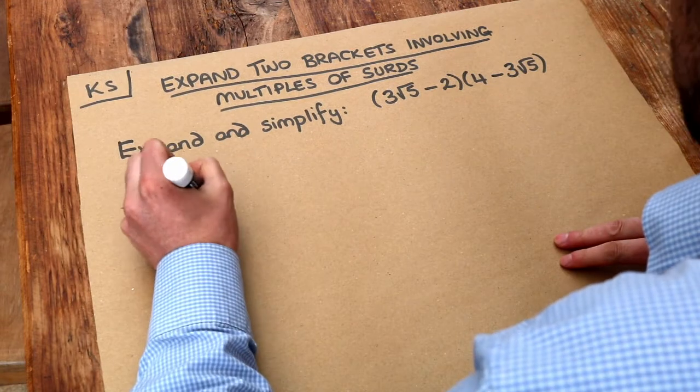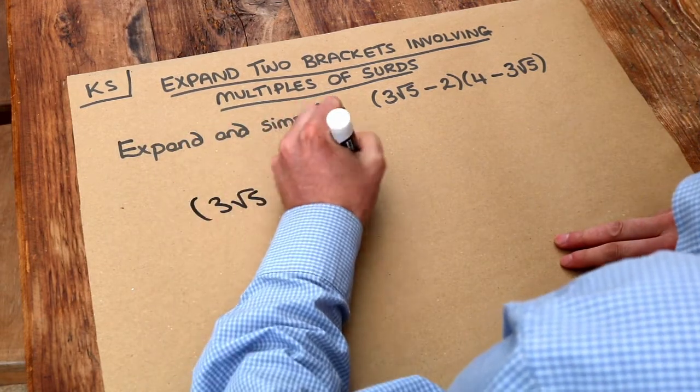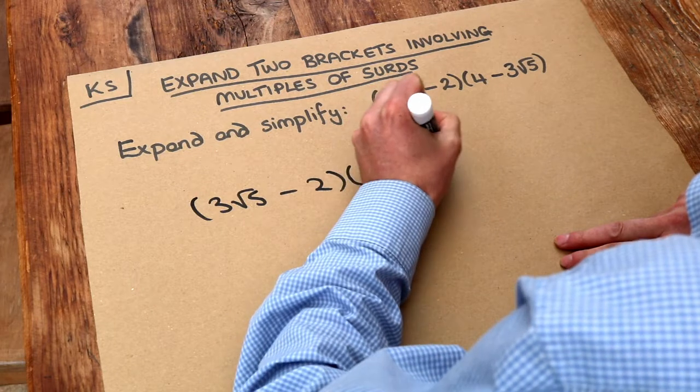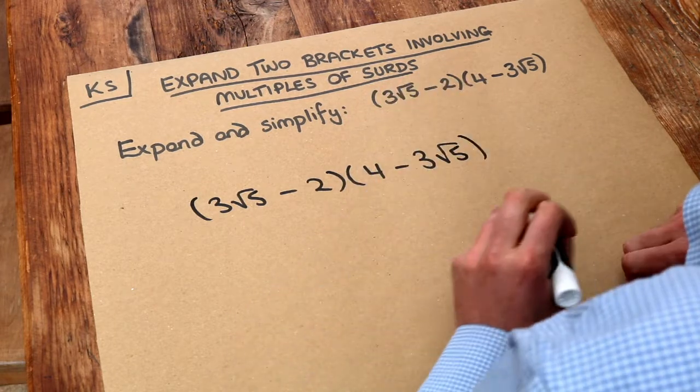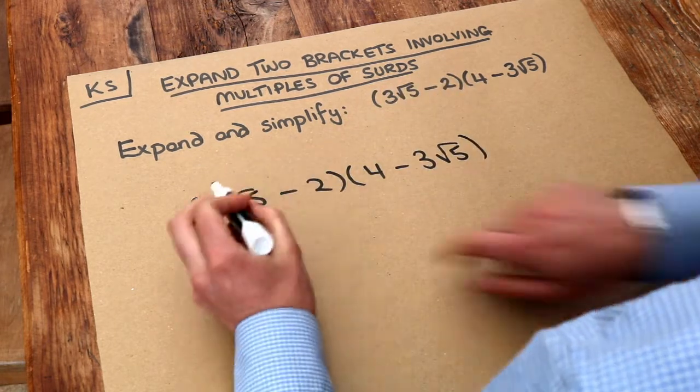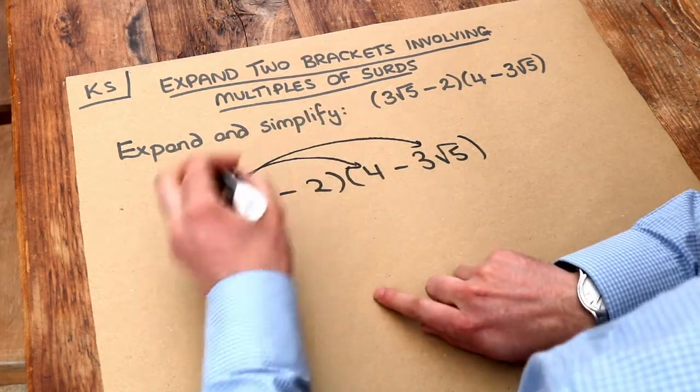But we do exactly the same as we did before. We just multiply each thing in the first bracket by each thing in the second. So this three root five in the first bracket, you're going to multiply by each thing in the second. Let's do that first.